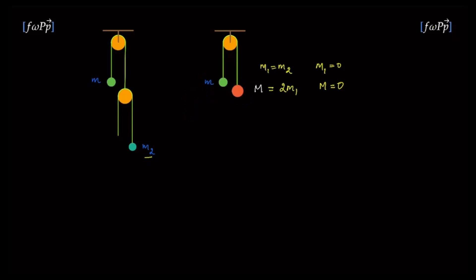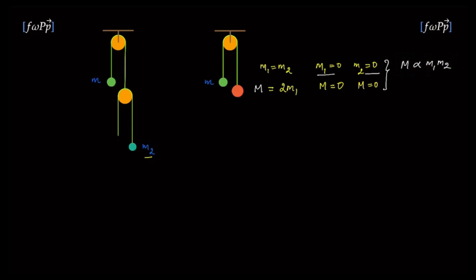The same argument goes for m2: if m2 is 0 and m1 is non-zero, then you would also need the equivalent mass to go to 0. So we have three conditions to put together. m must be proportional to the product of m1 and m2, because when either is 0, you get 0. Also, dimensionally, the numerator has dimension of mass squared, while the left-hand side needs only dimension of mass. The only way to remove a dimension of mass from the numerator is to have both masses appearing symmetrically in the denominator.